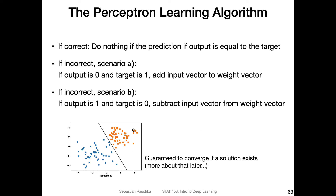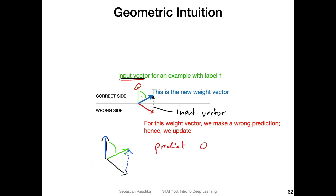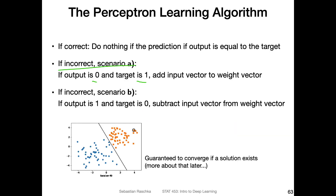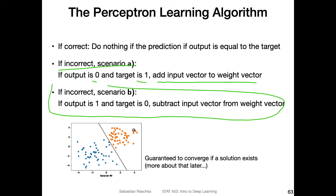This is exactly what happens in scenario A: the output is predicted as zero, although the target is one. We are on the wrong side, so we add the input vector to the weight vector, which corrects the decision boundary — as shown in the previous slide. The same concept also applies when the prediction and targets are flipped.